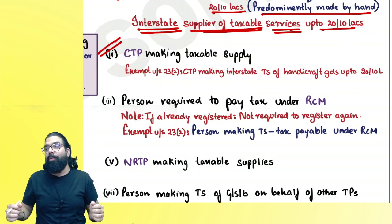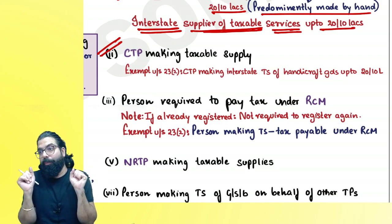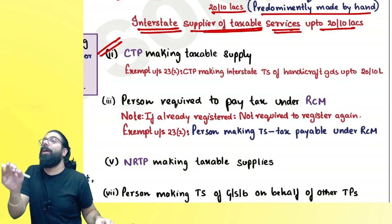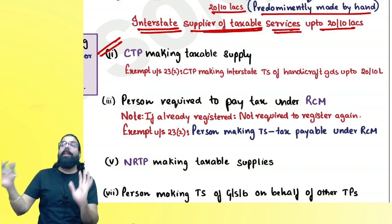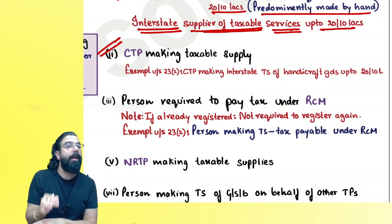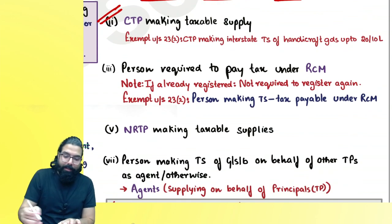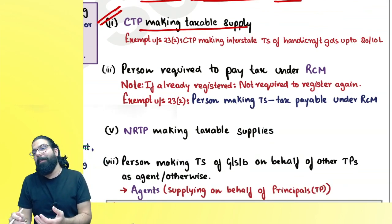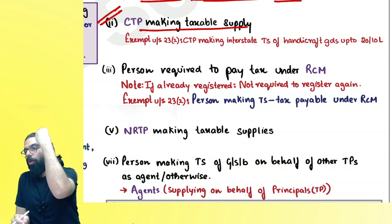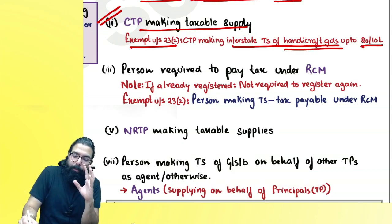A casual taxable person (CTP) is someone going from one state to another where they don't have a fixed establishment. For example, people coming from Delhi to Karnataka for a trade fair are casual taxable persons in Karnataka — they are required compulsory registration. However, handicraft goods suppliers coming temporarily to another state are again exempted up to ₹20 lakh or ₹10 lakh even for interstate taxable supply of handicraft goods.